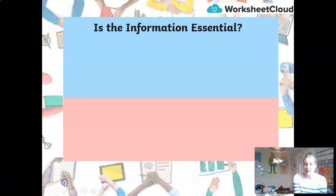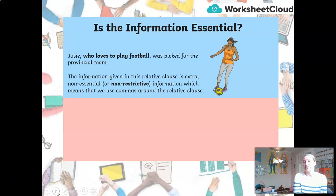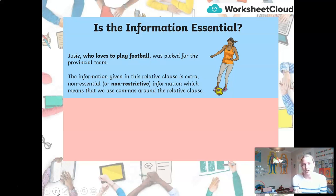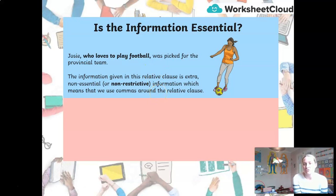Now, there's one other important thing when it comes to relative clauses — figuring out if the information you've added is essential or not. Have a look at this sentence: 'Josie, who loves to play football, was picked for the provincial team.' This information in the relative clause is extra — it's non-essential, which in grammar terms we call non-restrictive. That means we use commas around it — a comma after Josie and a comma after football.